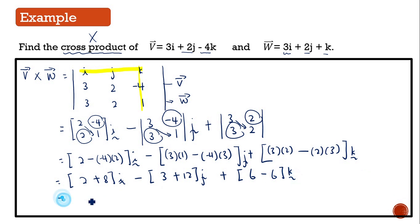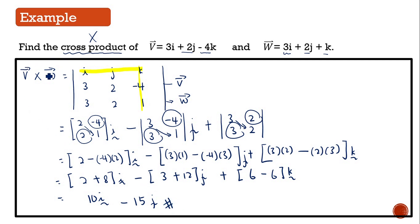Then you will get 10i minus 15j. So your answer for the cross product of vector V multiplied with vector W is equal to 10i minus 15j.